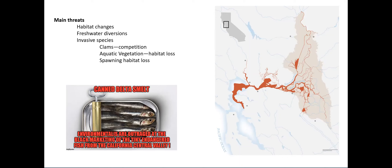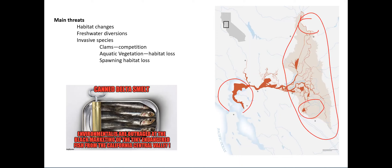Additional threats include aquatic vegetation that's been introduced, contributing to habitat loss, and spawning habitat loss. There's even a humorous photo of 'canned delta smelt' — which is misinformation, because nobody can find enough smelt to market them in any form. The map on the right shows their historic range from the actual bay all the way up into fresh water at the ends of the delta, where the Sacramento River meets the San Joaquin to form a braided convergence, running through Suisun Bay and the Carquinez Strait.